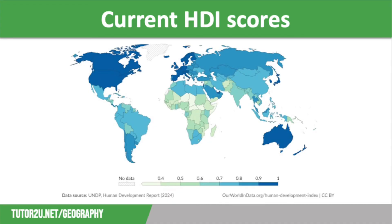The countries with the highest HDI scores currently are Switzerland in first place, Norway, then Iceland, Hong Kong, and then Denmark and Sweden share the fifth spot. The countries right at the bottom, with the lowest HDI, are Somalia, which has a figure of 0.38, South Sudan, Central African Republic, Niger, and Chad — and these all are below 0.4 on the scale.